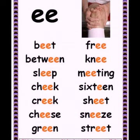Now let's take examples of double letter EE words: beat, between, sleep, chick, creek, cheese, green, free, knee, meeting, sixteen, sheet, sneeze, street. All those words displayed right now have one thing in common, which is double letter EE.